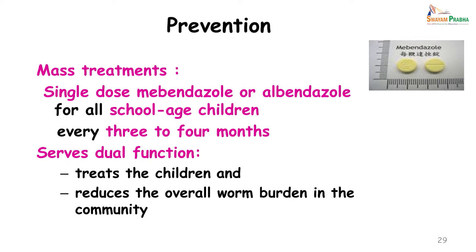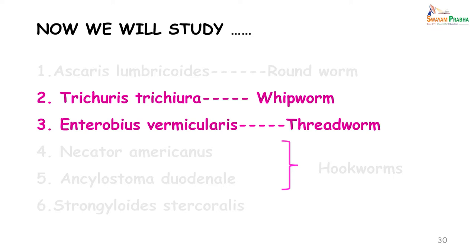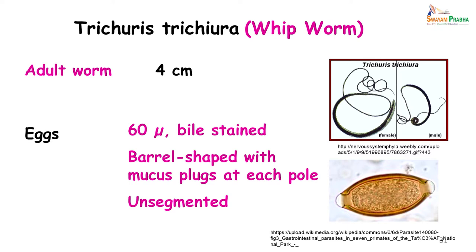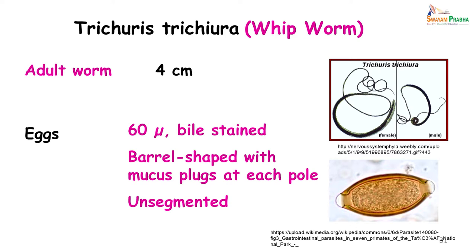Now that we have finished with roundworm, we will move on to Trichuris trichiura, also called whipworm. If you remember, these two — E. vermicularis and Trichuris — were the worms with a direct cycle. The whipworm adult worm is about 4 centimeters in length, the female is longer than the male. As you can see in the picture, these worms have a thicker area and a long whip-like thinner region — the thicker part could be the handle of the whip and the thinner part is the whip itself.